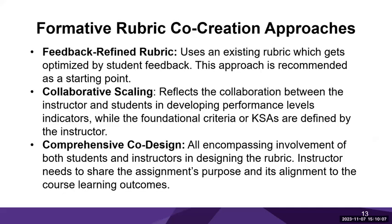So let's talk about how to go about rubric co-creation. I have operationalized this practice into three different approaches. The first is feedback-refined rubric, which uses an existing rubric that gets optimized by student feedback — this approach is recommended as a starting point. The second is collaborative scaling, which reflects collaboration between the instructor and students in developing performance levels and descriptors, while the foundational criteria — or KSAs, meaning knowledge, skills, and attitudes — are defined by the instructor. The third is comprehensive co-design, which involves all-encompassing participation of both students and instructors in designing the entire rubric. The instructor will need to share the assignment's purpose and its alignment to the course learning outcomes for this process to be effective.